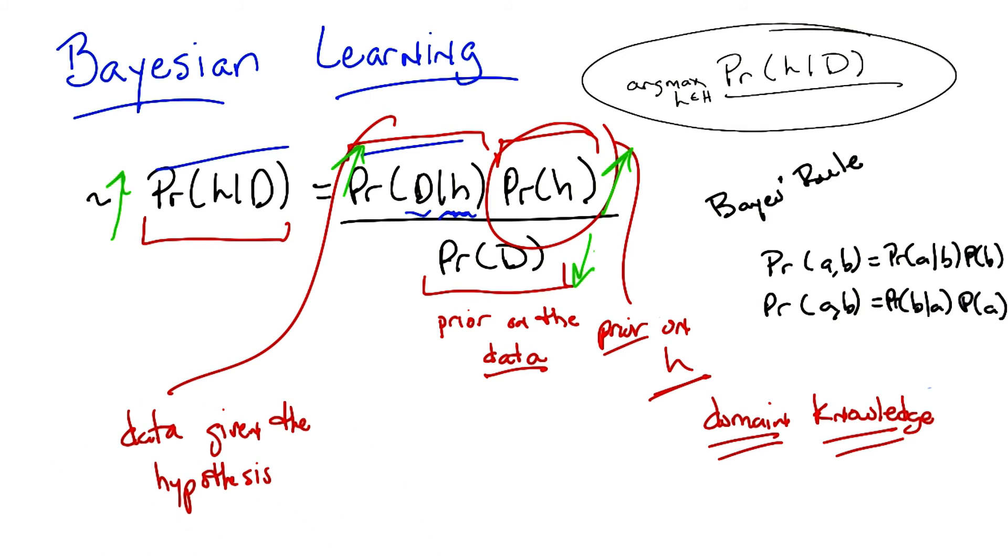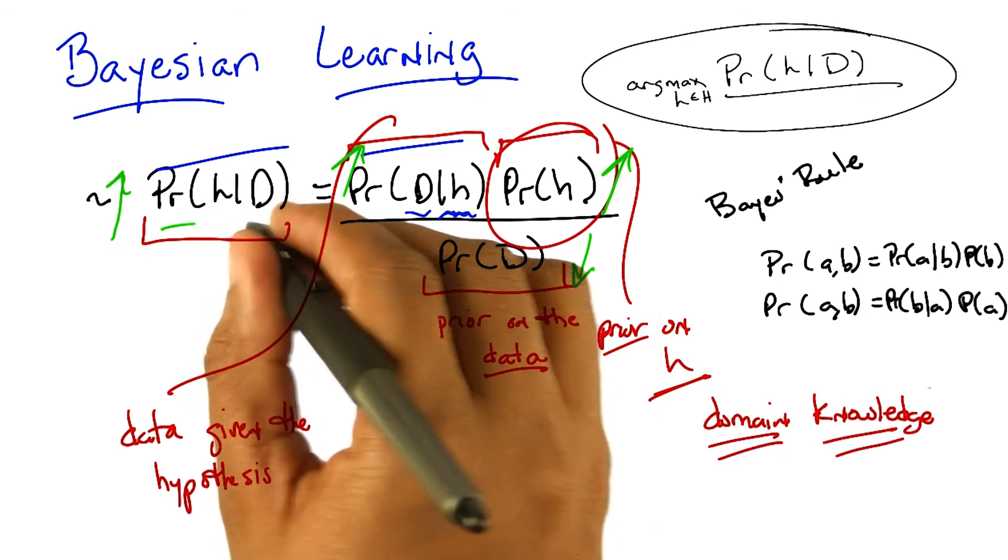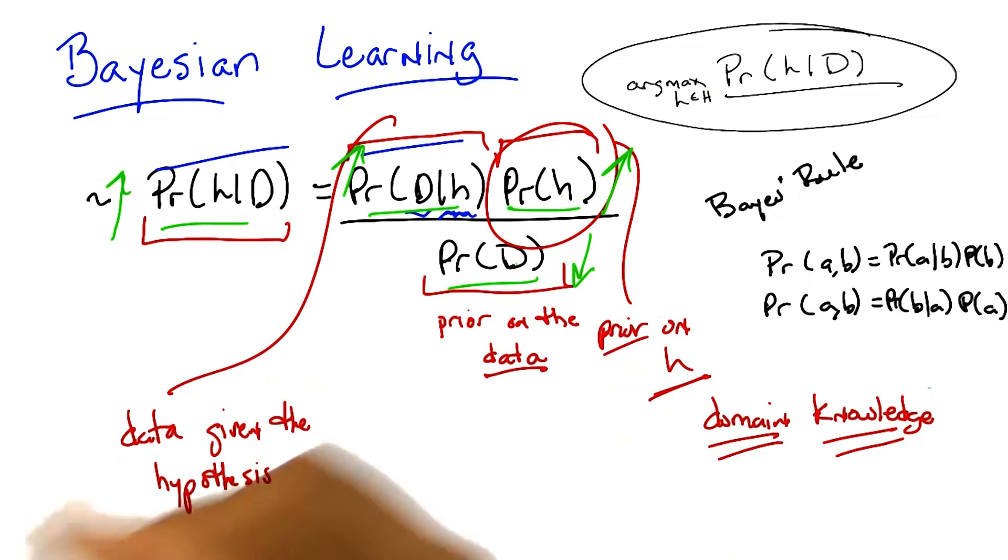So we got Bayes' rule, and notice what we've done. We've gone from this sort of general notion of saying we need to find the best hypothesis to actually coming up with an equation that sort of makes explicit what we mean by that. That what we care about is the probability of some hypothesis given the data. That's what we mean by best. And that that can be further thought as the probability of us seeing some labels on some data given hypothesis times the probability of the hypothesis even without any data whatsoever normalized by the probability of the data. So let's play around with Bayes' rule a little bit and make certain that we all kind of get it.